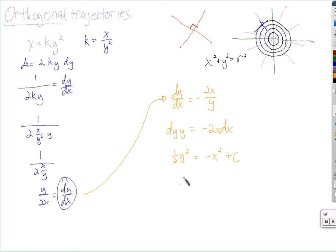And then we just solve for y. And we find that y squared equals negative 2x squared plus c. And y equals the square root of negative 2x squared plus c.